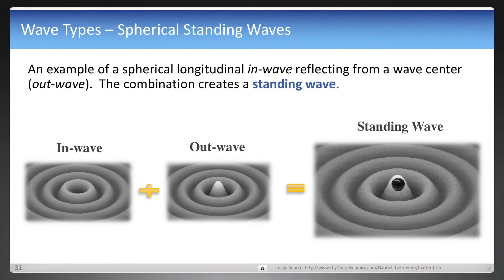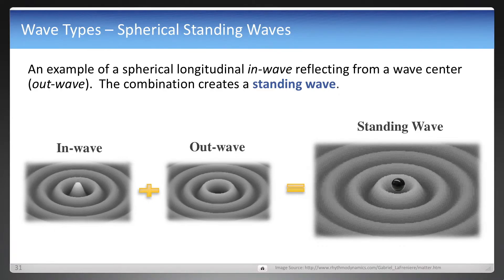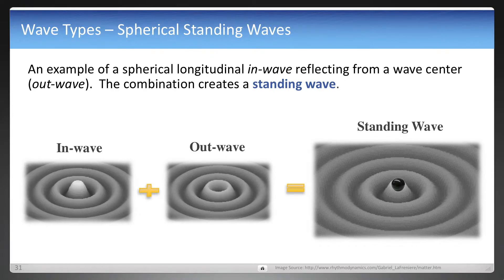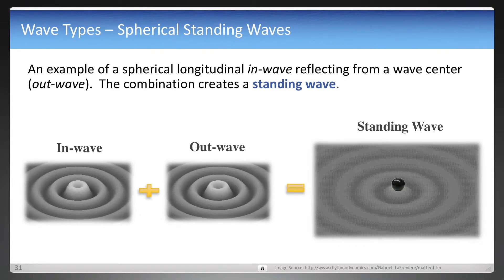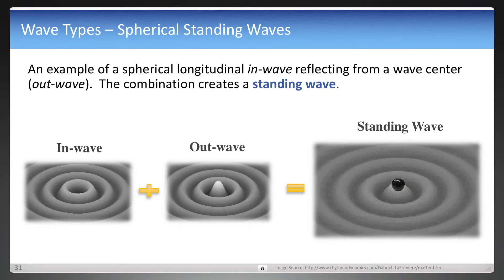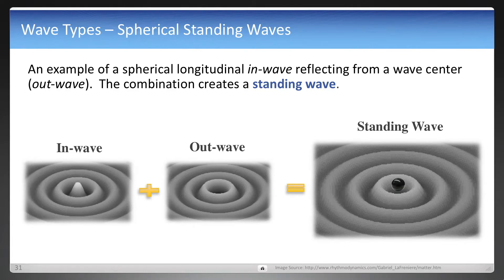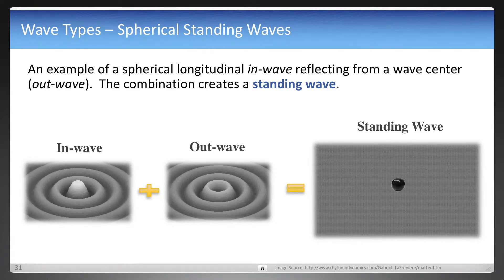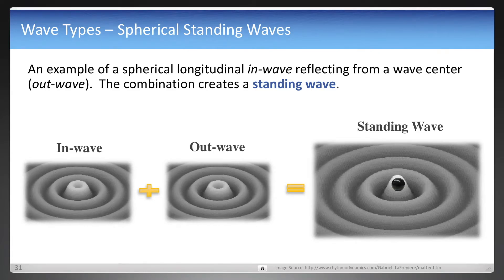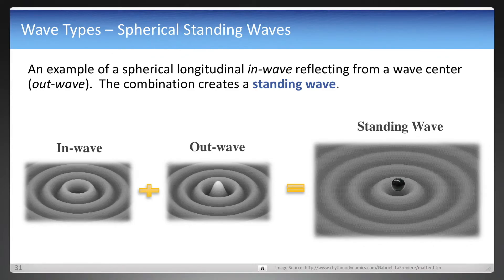Now standing waves, because these are spherical waves really, they're very difficult to visualize, but this is a computer simulation of one. And it's the addition of that in-wave to the far left, plus an out-wave that's being reflected there. And the combination of those two produces the standing wave on the right. And that's an illustration of a spherical standing wave in a three-dimensional view.